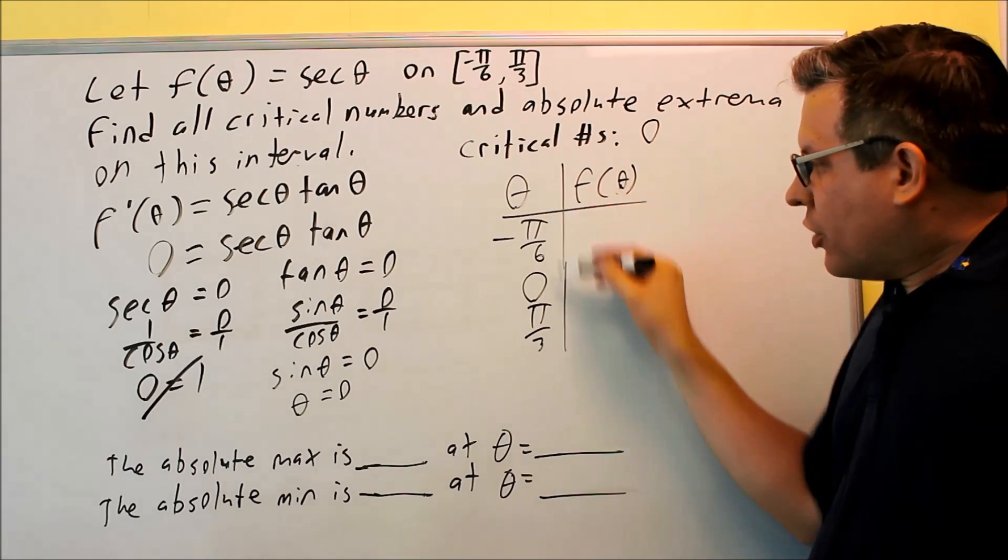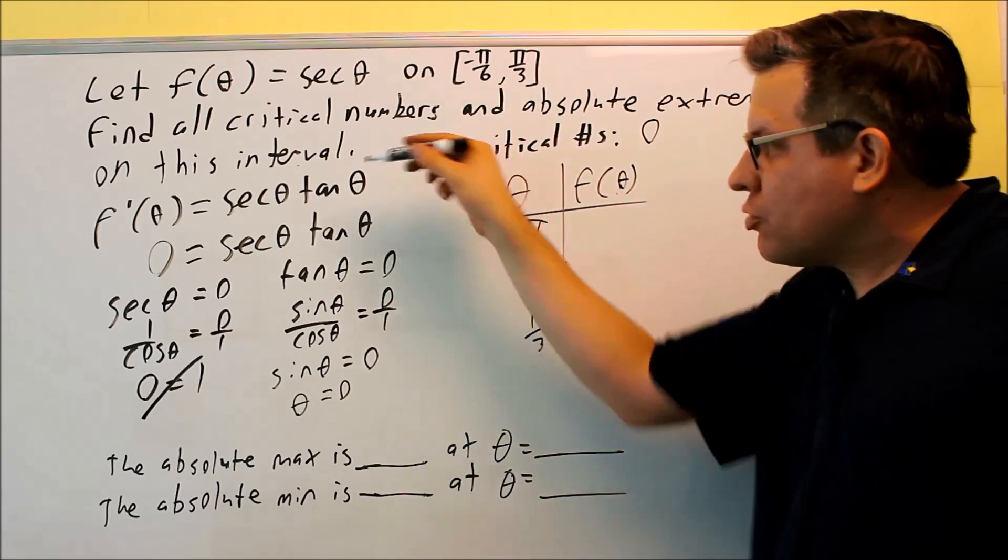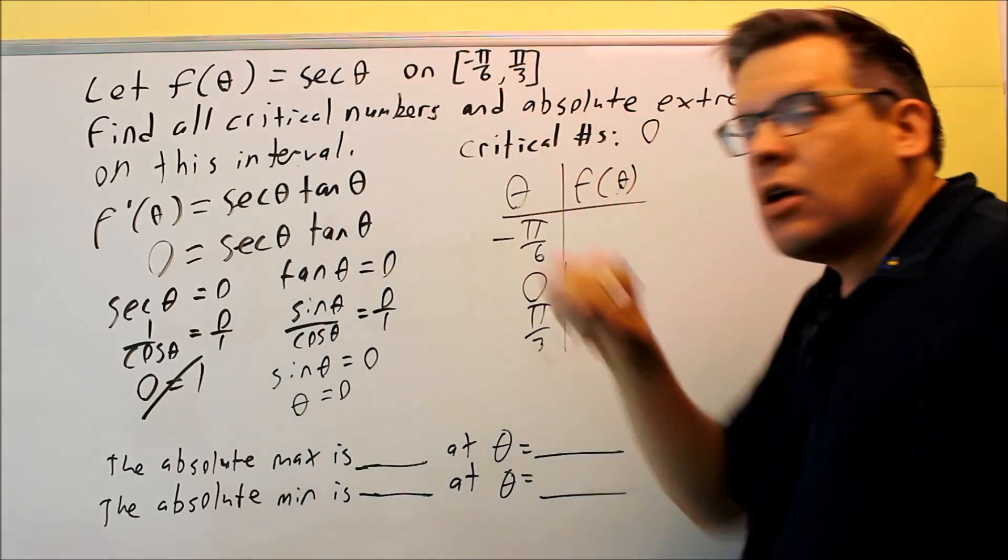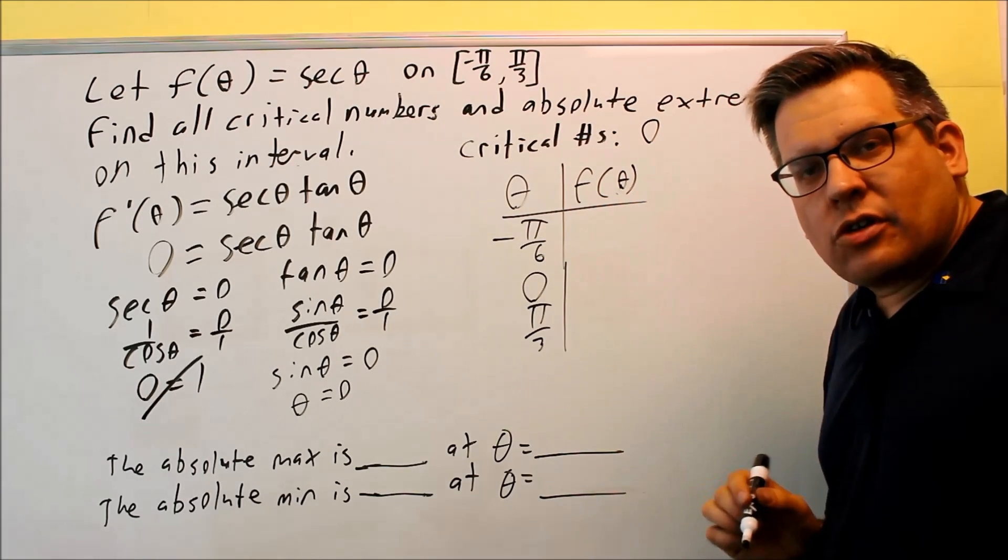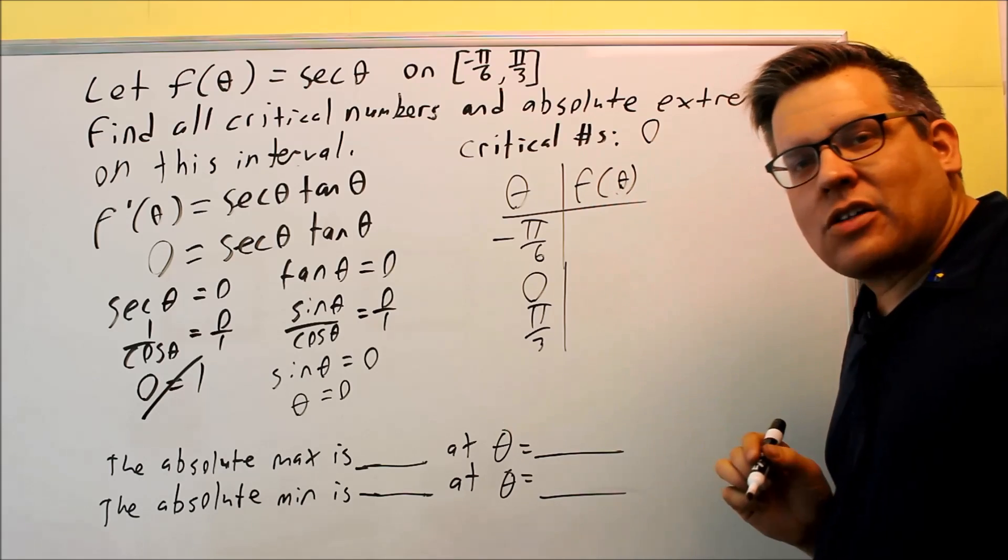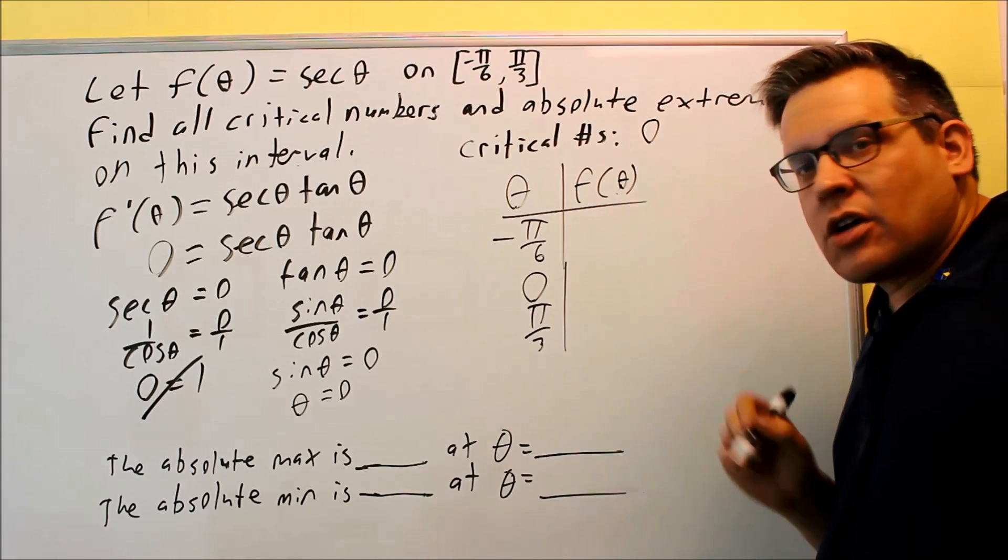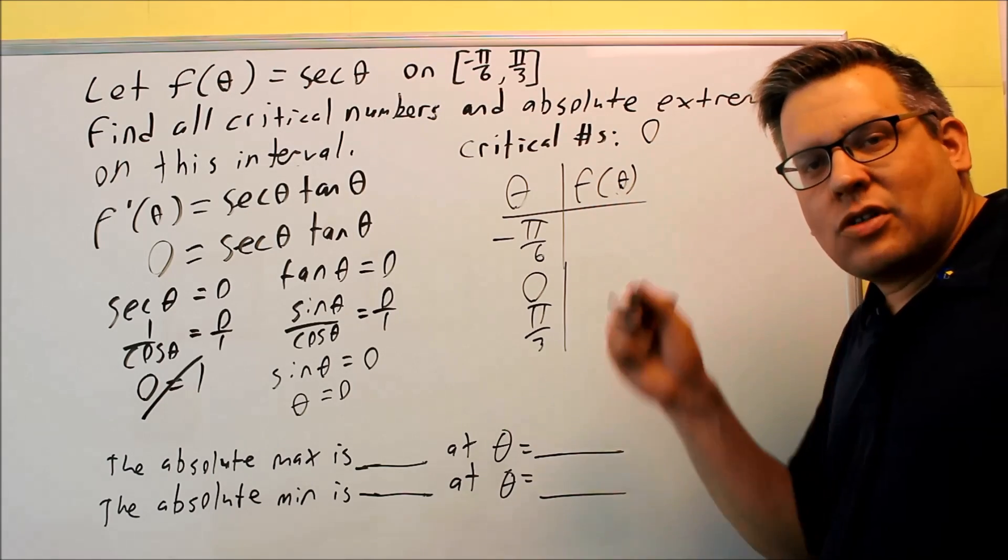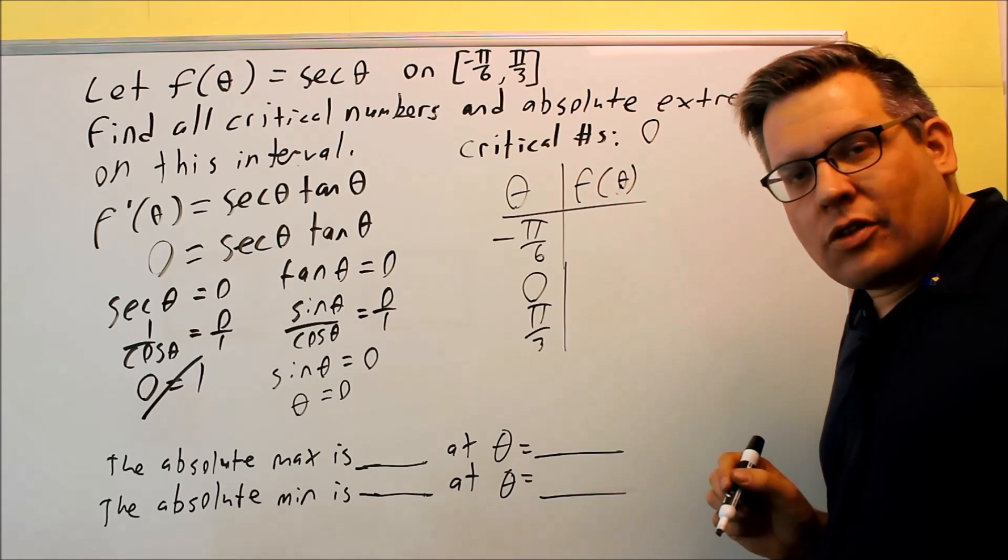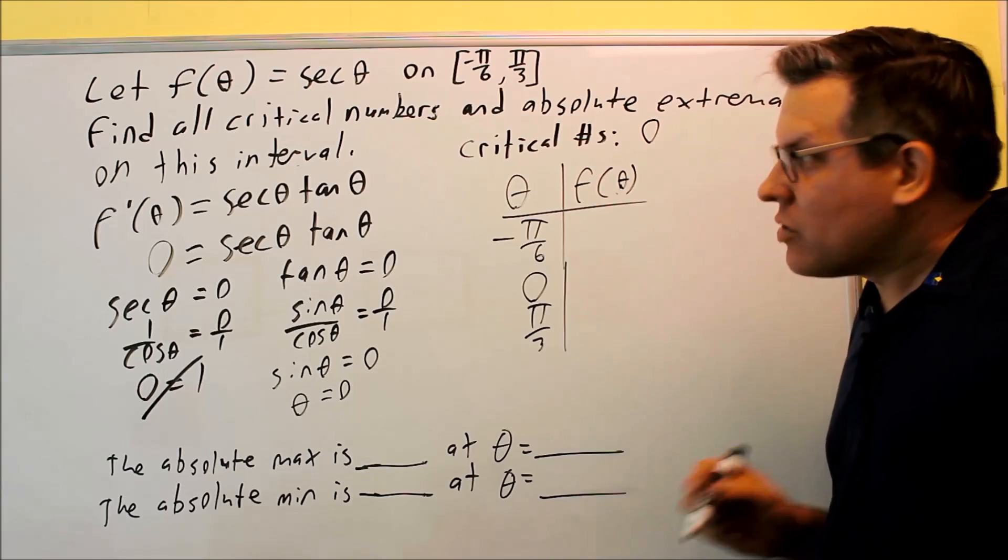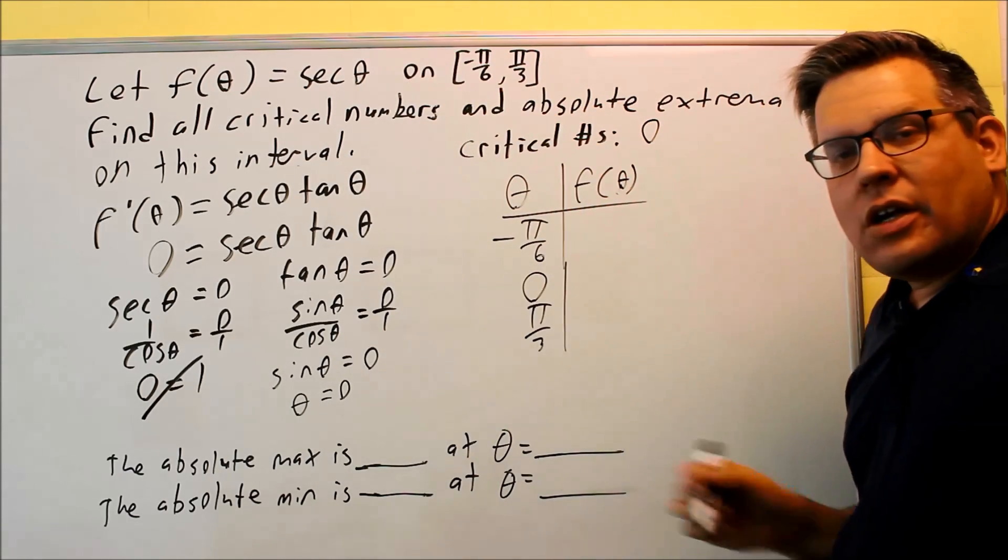Remember, when you put these values back in, you're not using the derivative. You're putting it back into the original one. Now, this one is going to give you some square roots as part of your answer. It's probably better, instead of writing the exact answer here, to actually use a decimal because that's the only way you're going to tell how big that is compared to the other numbers on the list.